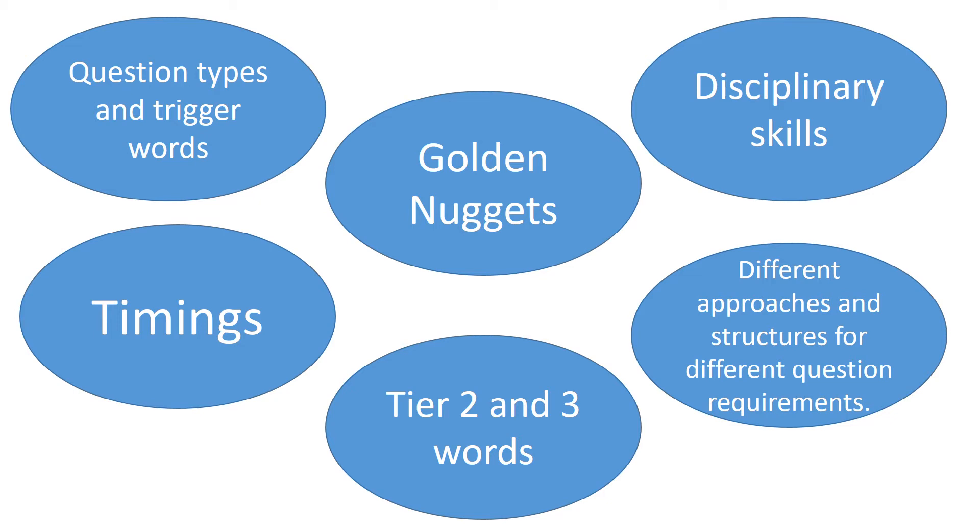So we've identified in our knowledge organisers our golden nuggets. They are definitely something we want to build retrieval tasks around. We've identified tier two and tier three words. But we also need to consider disciplinary skills. In my case, that would be things like dealing with causation or interpretations.